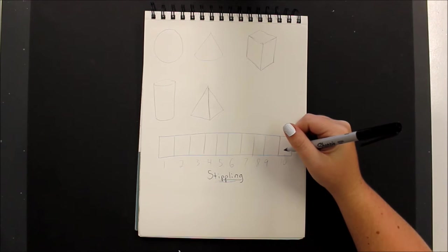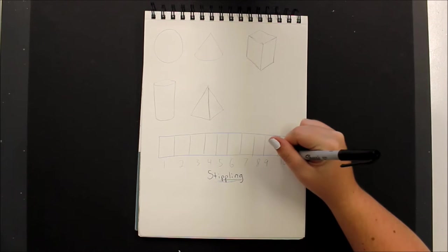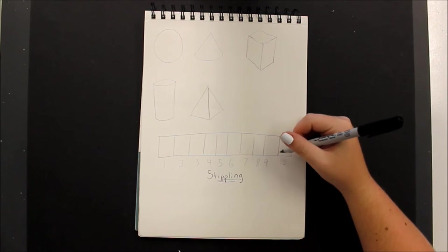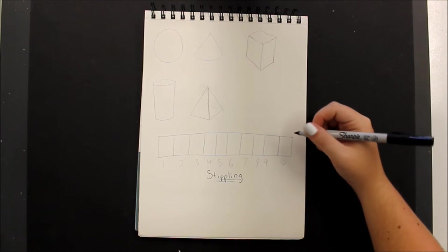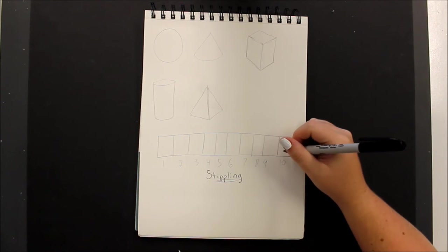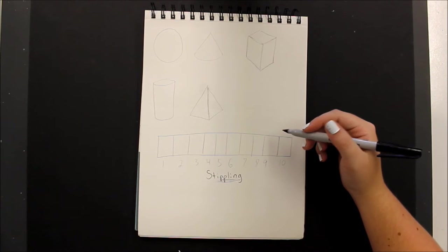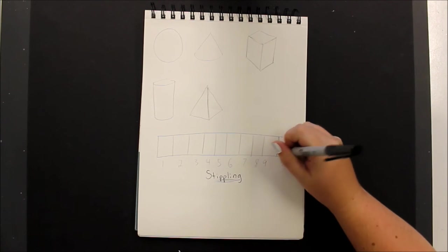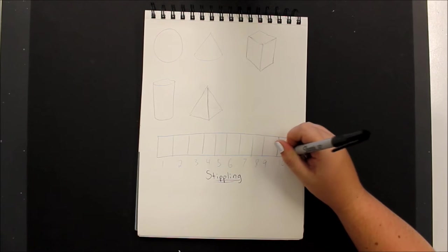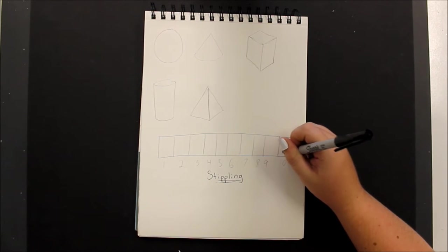So for 10, that is your darkest value, that is pretty much going to be solid black. So the concept of stippling is that the dots that are closer together are going to make it appear darker than dots that are further apart. So I'm just going to start putting lots of little dots all together.